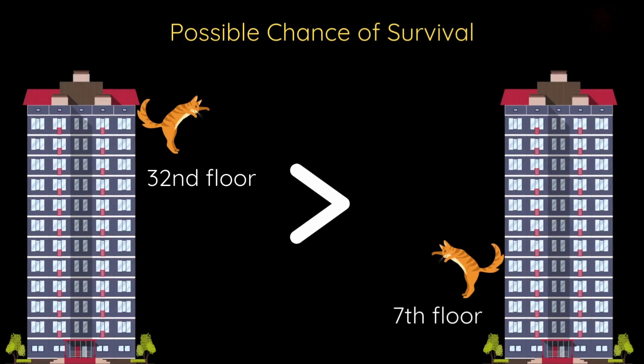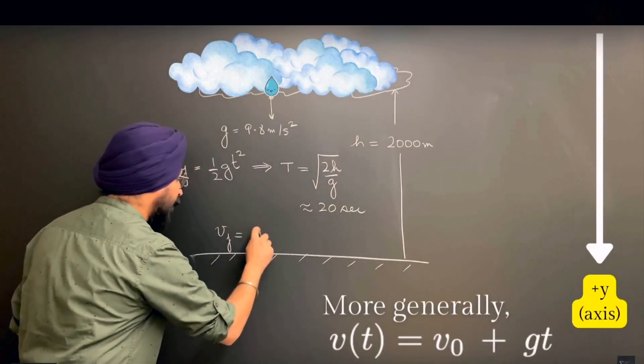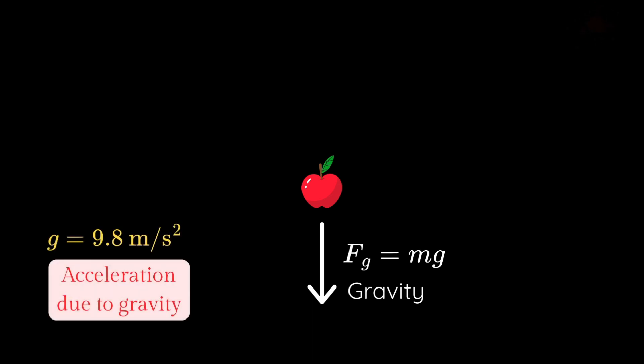A falling cat is influenced by primarily two key forces: gravity and air resistance. You might remember from one of our previous videos how air resistance prevents raindrops from falling at the speed of bullets. Gravity pulls objects downward with a force equal to their mass times the gravitational acceleration: F = mg. Simple enough.